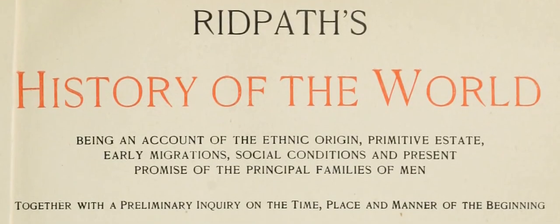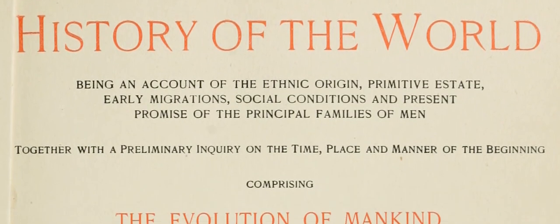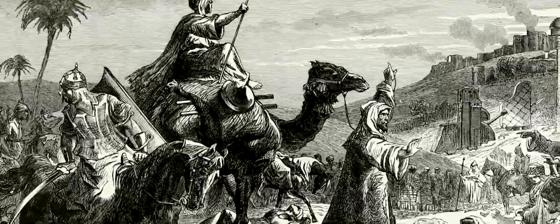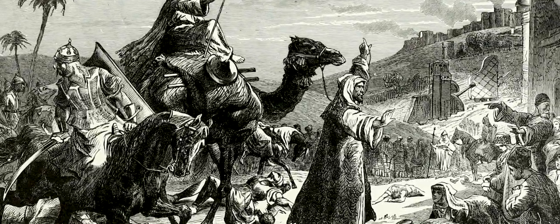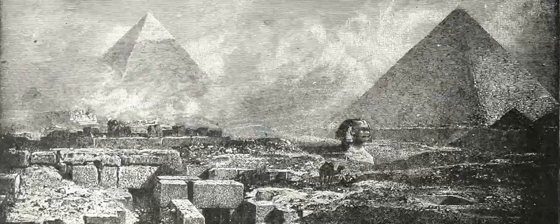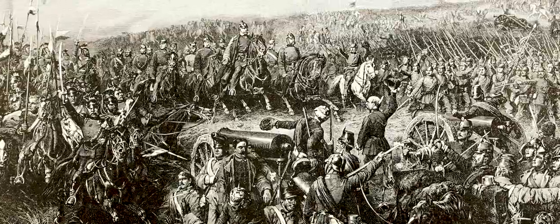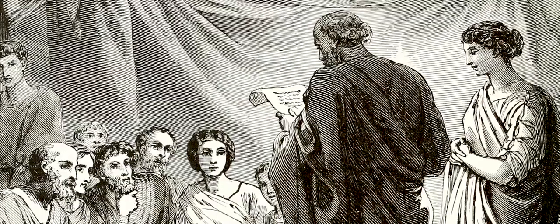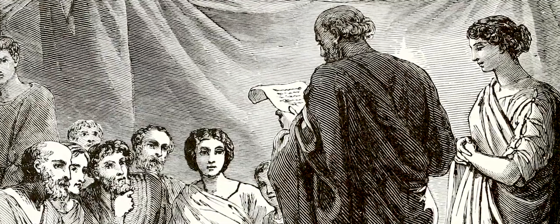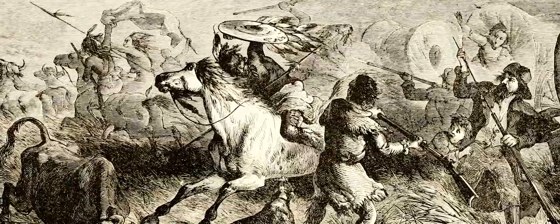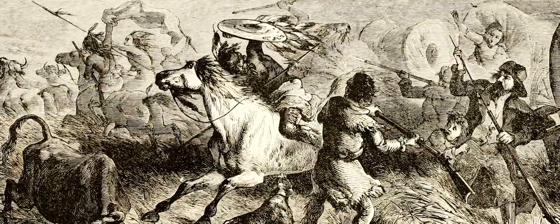In 1894, Ridpath published the first edition of his History of the World. The book was said to have provided readers with a complete history of known human civilizations at that point in the timeline, beginning with ancient Egypt and ending with the First World War. He dealt with political, economic, social, and cultural issues in an attempt to bring within the average reader a concise and accurate summary of the principal events in the career of the human race.